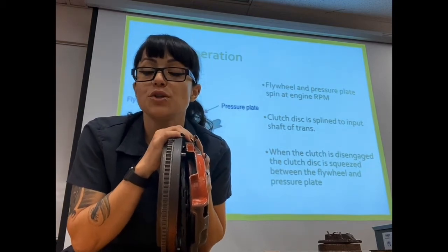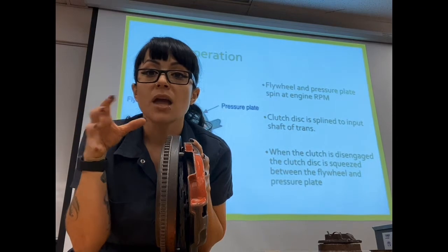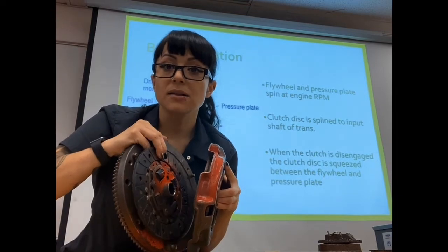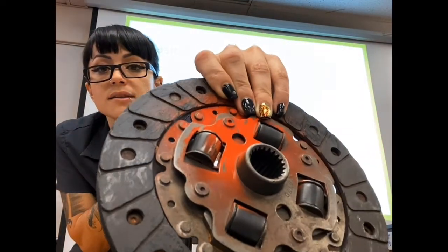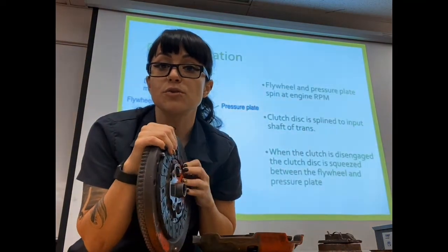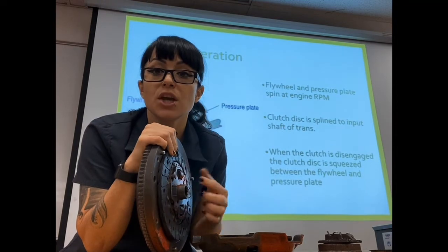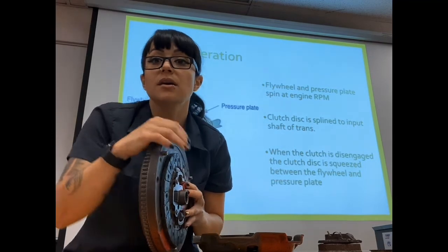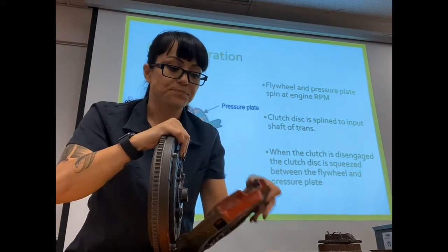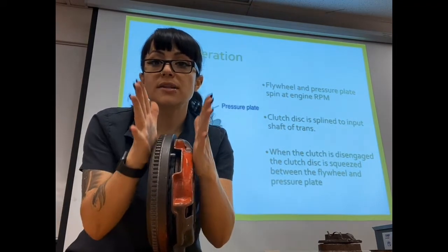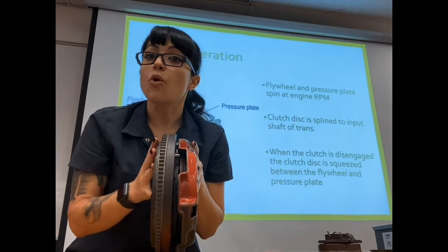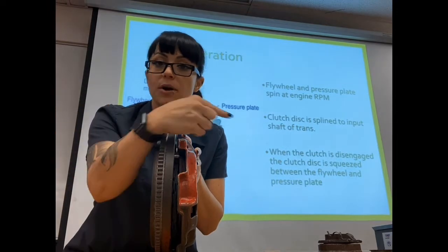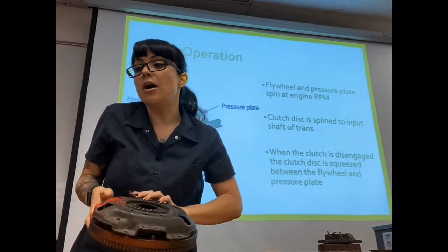My flywheel and pressure plate are spinning at engine speed. The clutch has a spline in the center of it, and that spline is going to attach to the input shaft of my transmission. So my clutch's center piece is the only thing connected directly to my transmission. When these two components squeeze together, I engage my engine with my transmission and the engine is able to transfer power down to the transmission — that's the job of my clutch assembly.